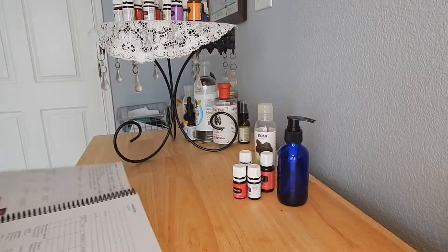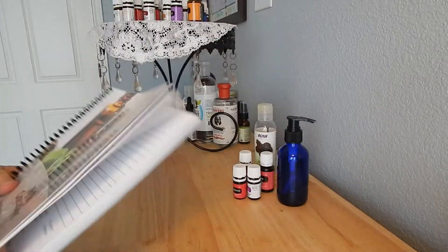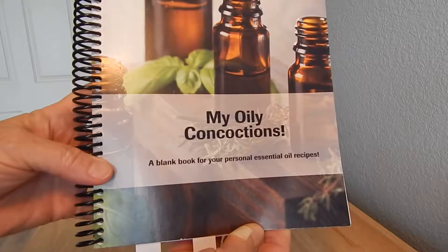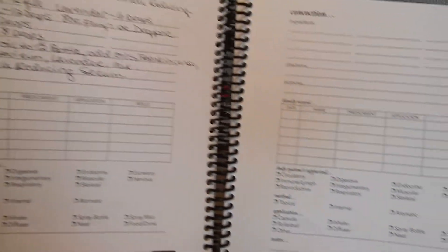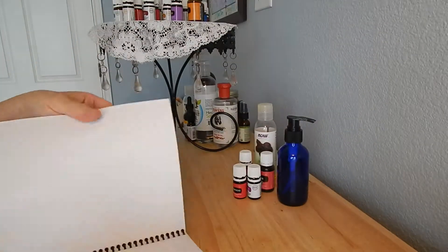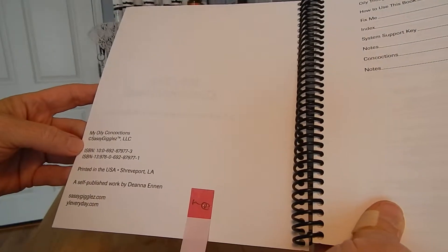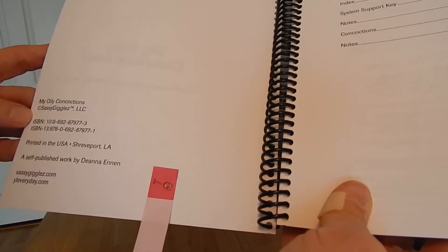Also there is a lady that did this book, it's called My Oily Concoctions, and I highly recommend this if you're going to be doing recipes. I love this, basically it's a book for you to record your recipes and write them down. I'm just starting so I'm just getting mine. The lady that I got this from, I got it at a Young Living event, her name is Deanna and she's at Sassy Giggles dot com.